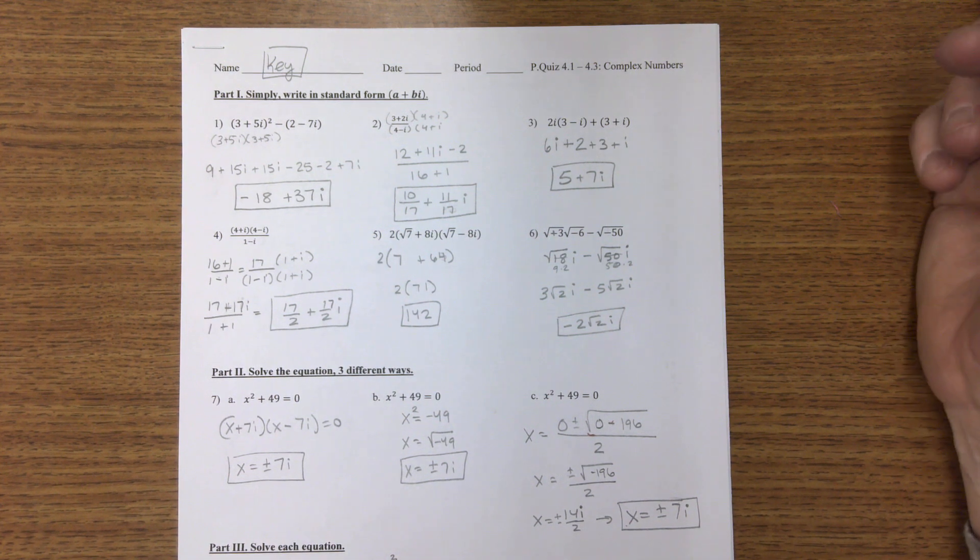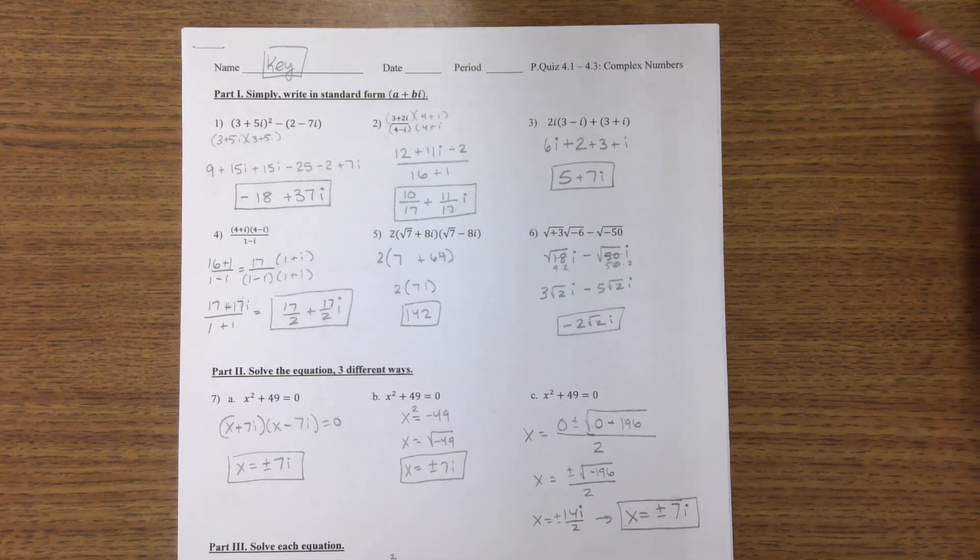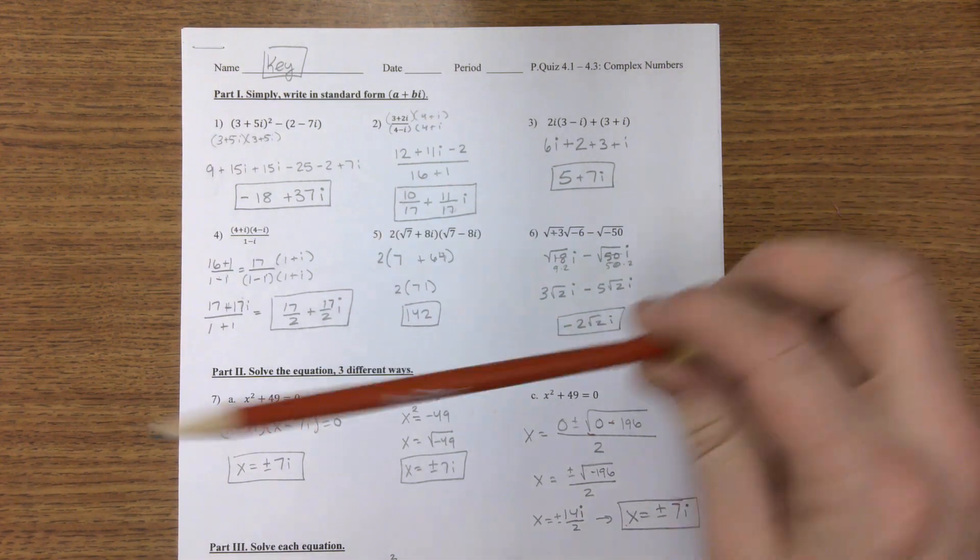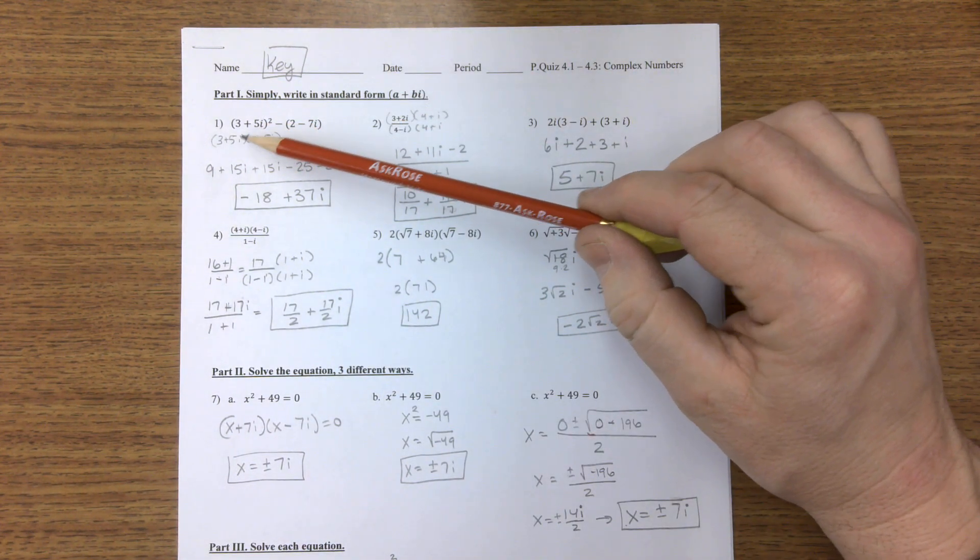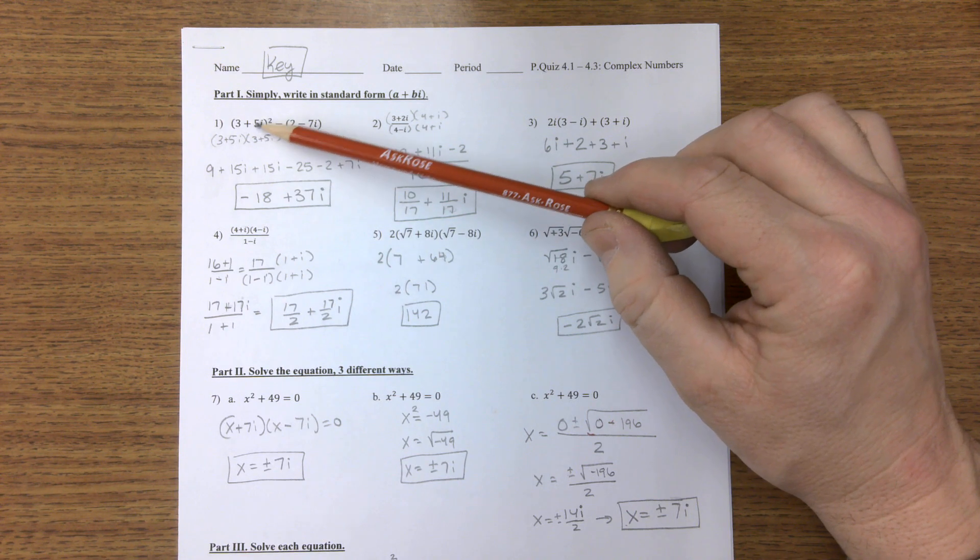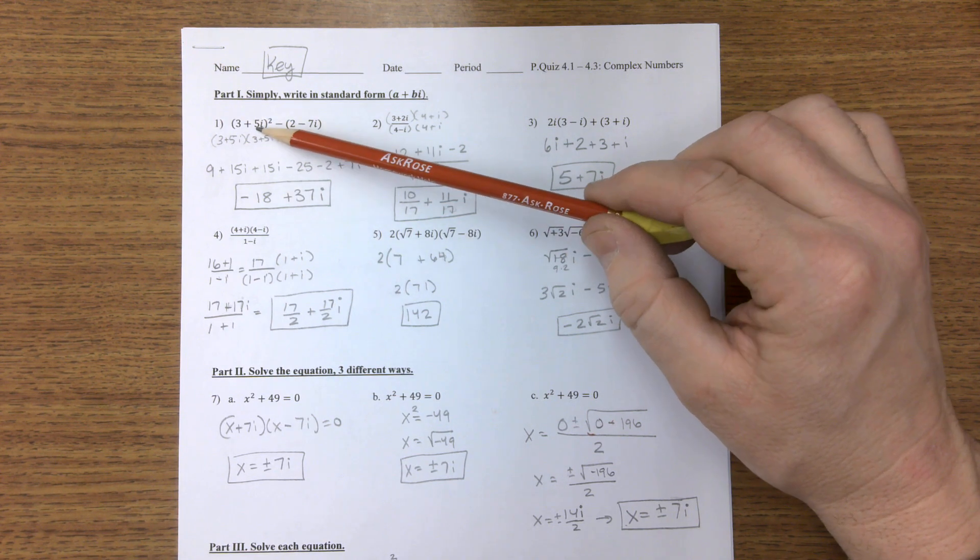Alright, hello everyone, this is Mr. Crozier. I'm going to go over our practice quiz here. I have all the answers boxed here for you. For the first one, problem number one, you're going to want to make sure you write this twice and foil this. You cannot distribute the squared in there, so write it twice.